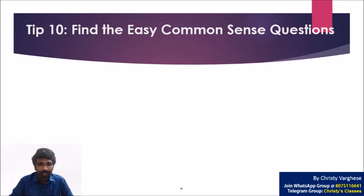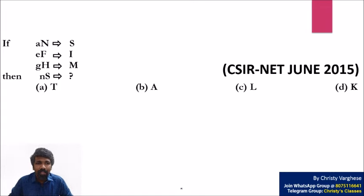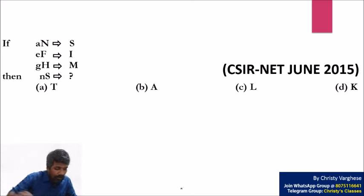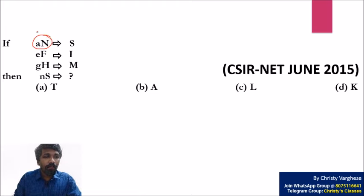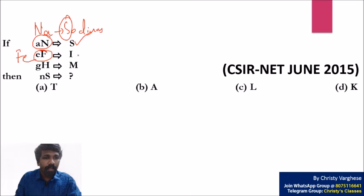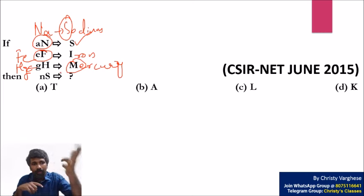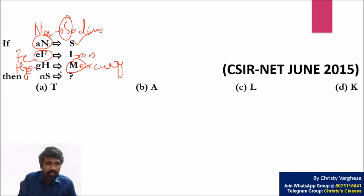The next tip is finding easy common sense questions. This is a general science question with common sense: the pattern reverses the chemical symbol letters. 'An' reversed is 'Na' (sodium) → first letter S. 'Ef' reversed is 'Fe' (iron) → first letter I. 'Gh' reversed is 'Hg' (mercury) → first letter M. So 'N' reversed is 'Sn' (tin) → first letter T. Option A — T — is the correct answer.